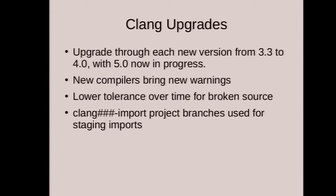As we did with GCC early on, we've been tracking updates to Clang on an ongoing basis. Each time there was a Clang update — 3.3, 3.4, 3.5 through to 3.9, 4.0, then 5.0 and next 6.0 — we imported them into FreeBSD. We do that for many reasons: bug fixes, new C++ and C standard support. When we switched to 3.3 it had full C++11 support; 3.4 added full C++14 support; and C++17 features are scattered throughout later versions.